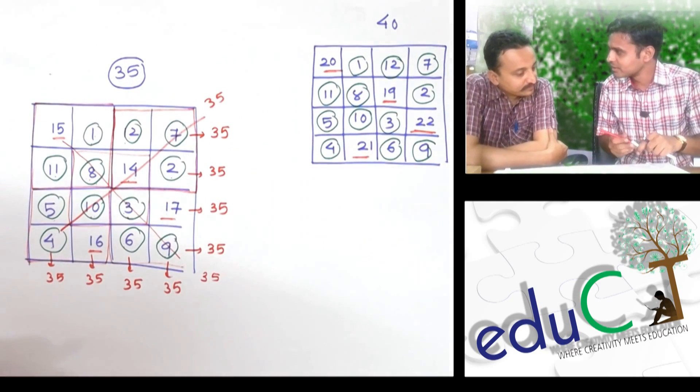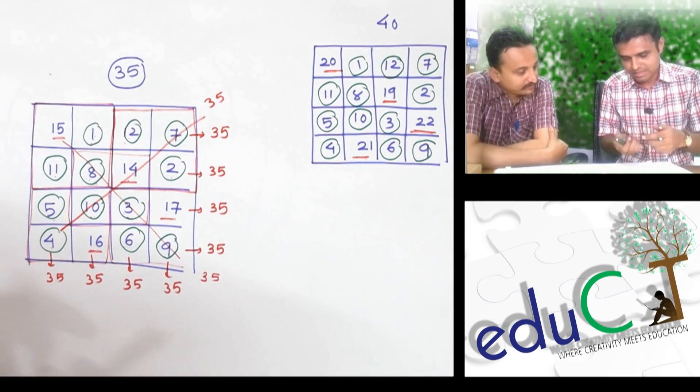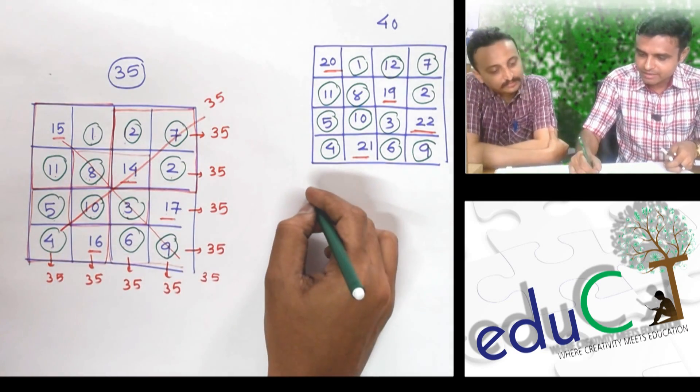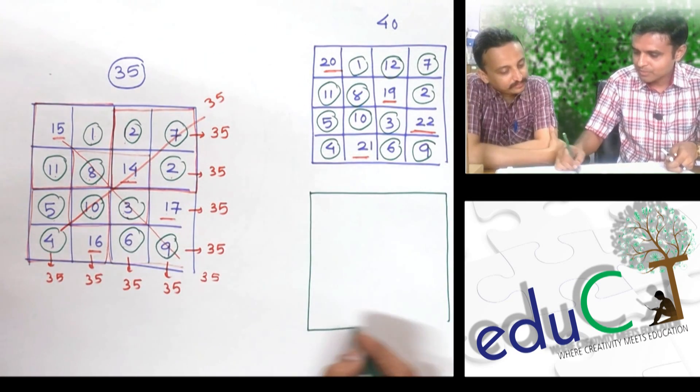So, today, we've got to know that these 4 places are common. So, if you have made a magic square, this is very simple. Let us take it. I have an idea. You have asked me what it is.